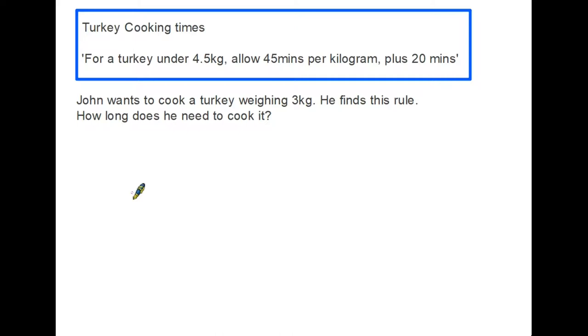So John wants to cook a turkey. His turkey weighs three kilograms, so that is under four and a half. So this formula, this rule, does apply to his turkey. So what we need to do is simply follow the steps within the instructions, within the formula. And the first thing it says is allow 45 minutes per kilogram. So what does John have? He has three kilograms. 45 minutes per kilogram is three lots of 45. Three times 45. In other words, that adds up to 135 minutes.